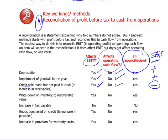What about write-down of inventory to recoverable value? This is an accounting adjustment. When you apply IAS 2 and write off your inventory to recoverable value, it's not really a cash flow movement. So if it's a write-off, it was a minus in EBIT; now it comes back with a plus to neutralize its effect. What about an increase in tax payable? It's not in Earnings Before Interest and Tax since we're before tax, and it doesn't really affect operating cash flows either. So this is a good example of an item that does not need to be reconciled.